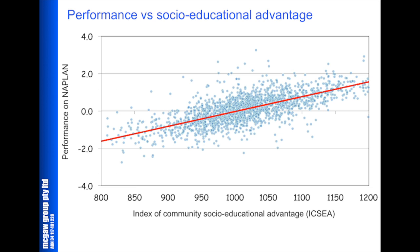This graph shows the relationship between ICSEA and the performance of schools on NAPLAN. At the bottom end, at 800 on ICSEA — the left-hand end — the schools at that level tend to perform less well on NAPLAN, whereas the ones at the right, up around 1,200, tend to do better. The red line summarises that relationship.